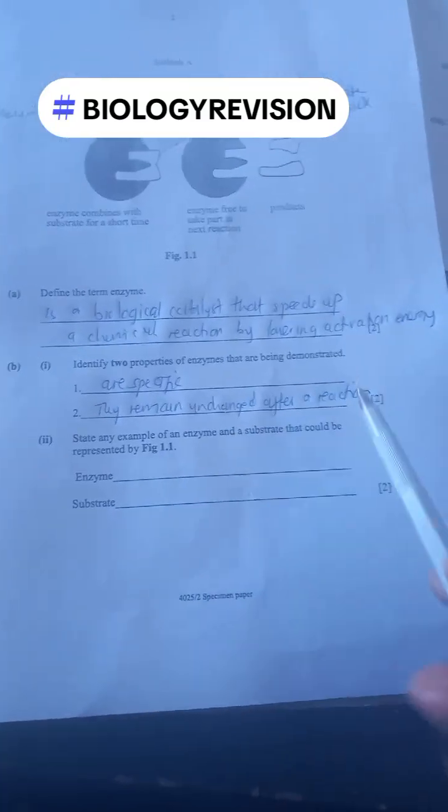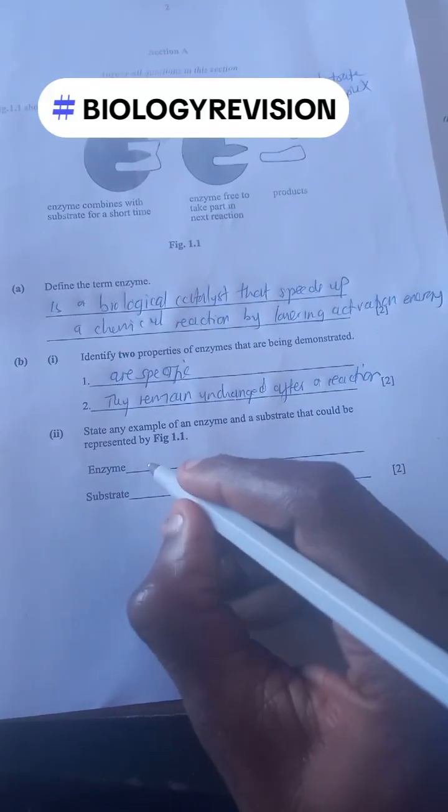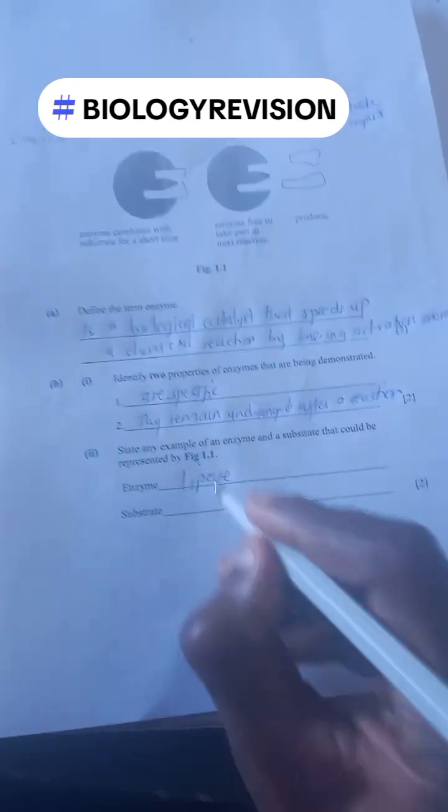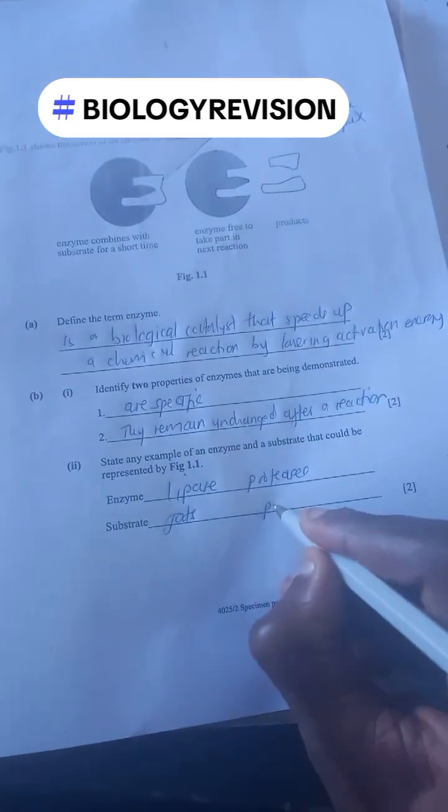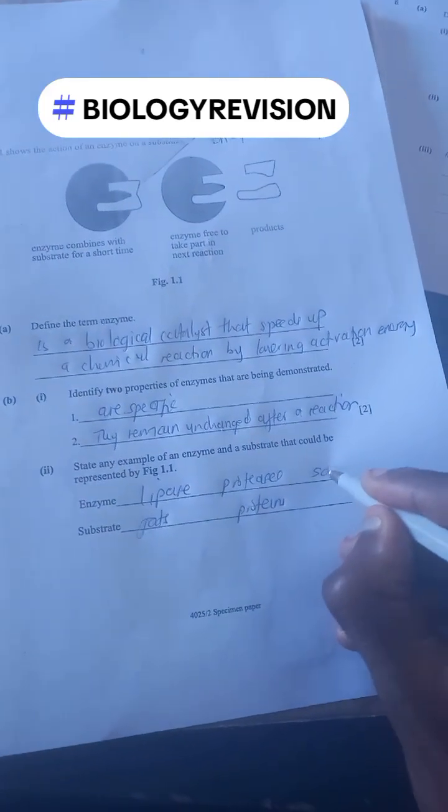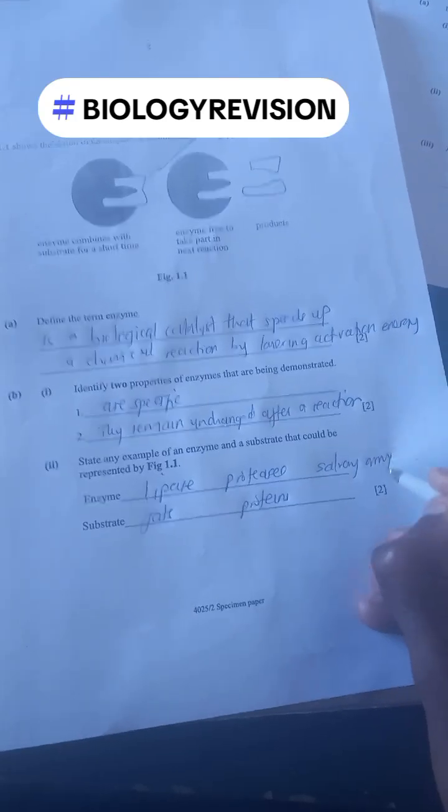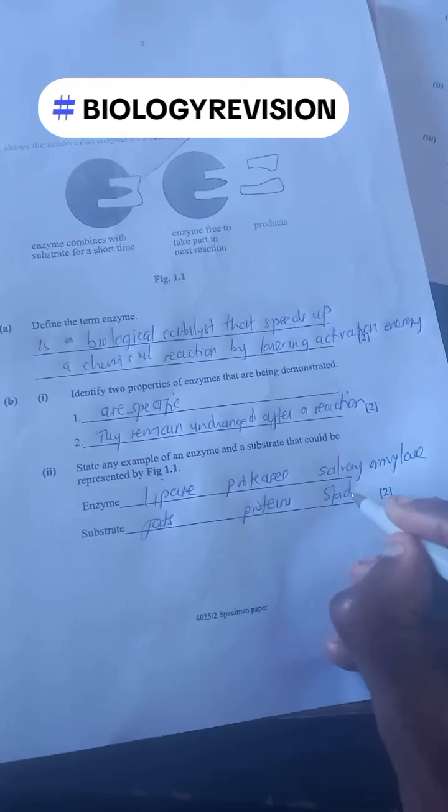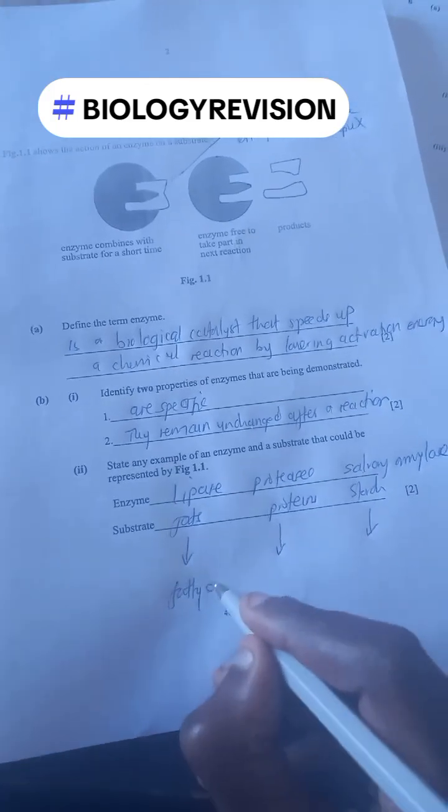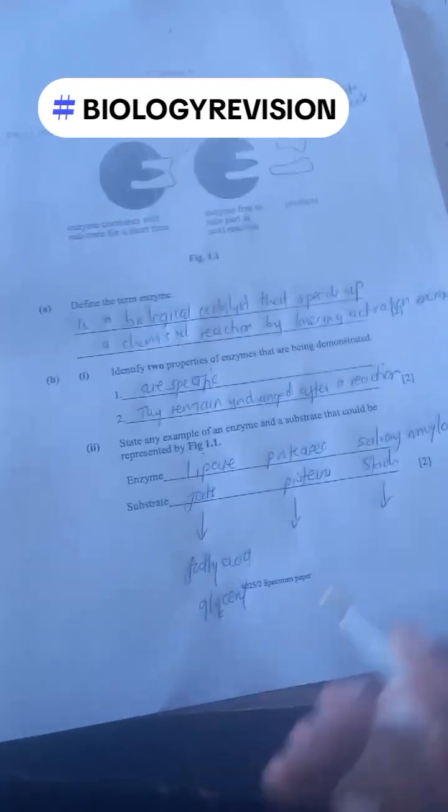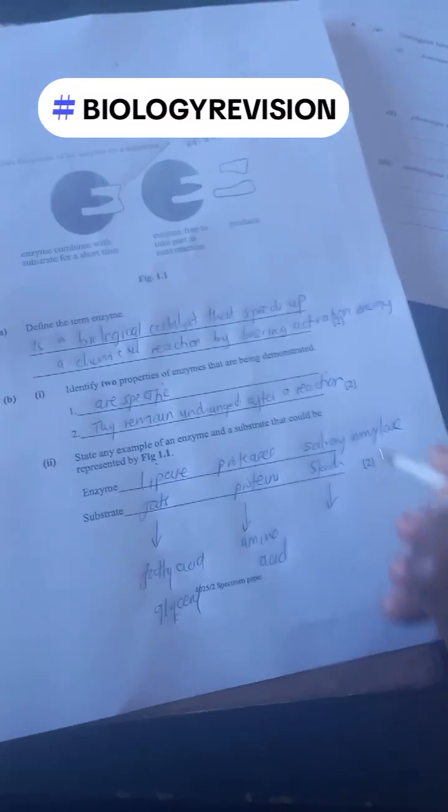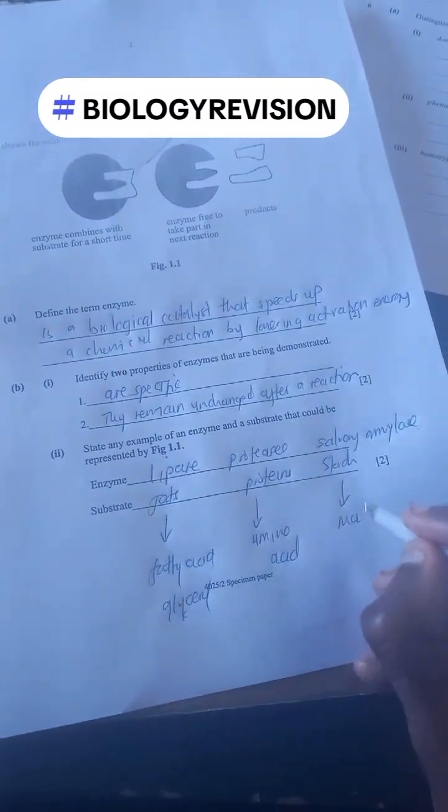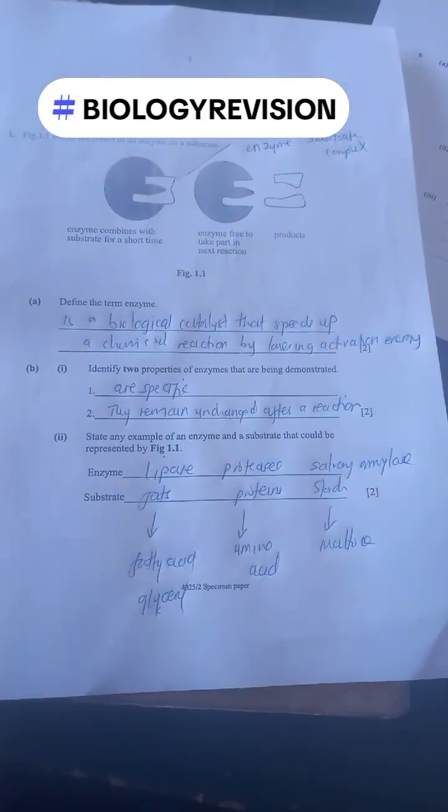State an example of an enzyme and the substrate that could be represented. Examples of enzymes: we have lipase which acts on fats, protease which acts on proteins, and salivary amylase which acts on starch. Lipase acts on fats to produce fatty acids and glycerol. Protease produces amino acids. Salivary amylase acts on starch to produce maltose. So guys, you just need to know this. Don't forget to subscribe, thank you.